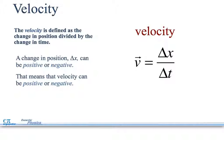A change in position, delta x, can be positive or negative. That means that the velocity can be positive or negative. You can never have a negative time. Moving forward is a positive velocity, where moving backward is a negative velocity.